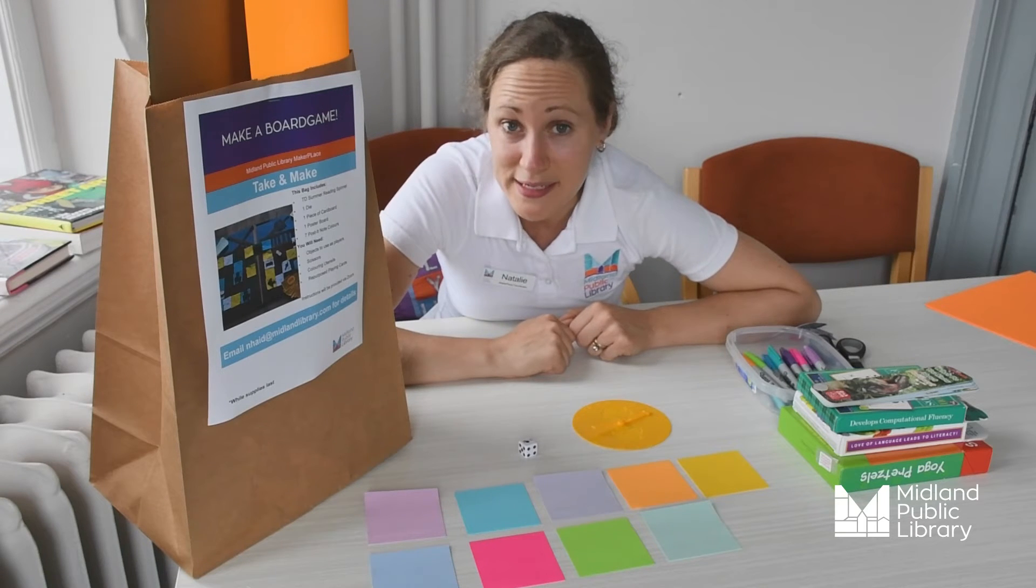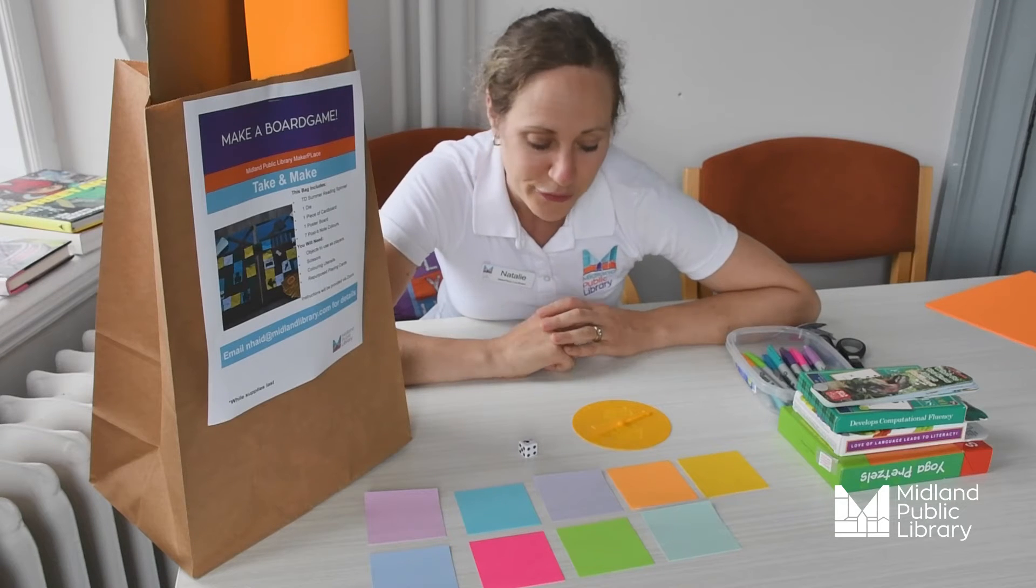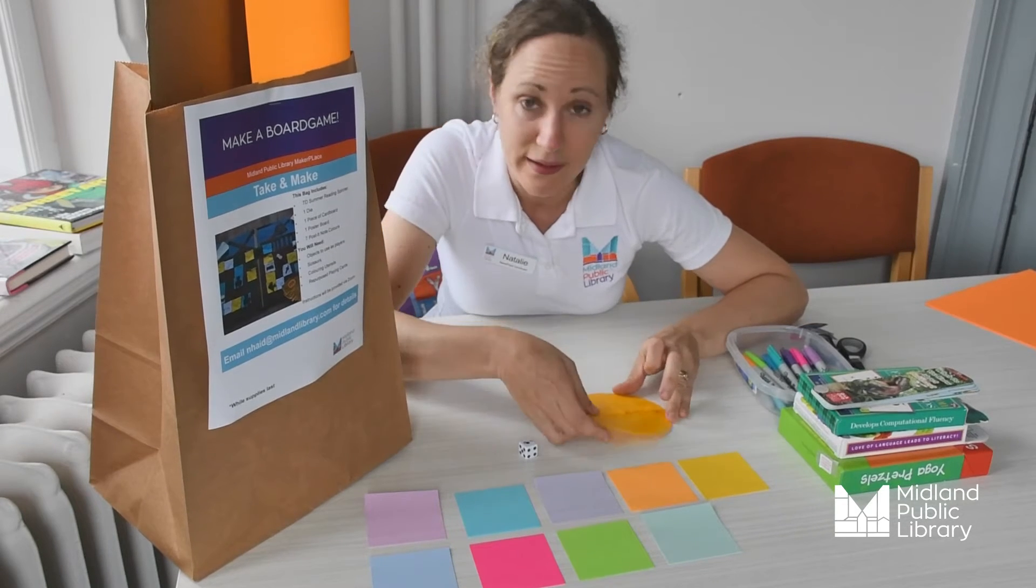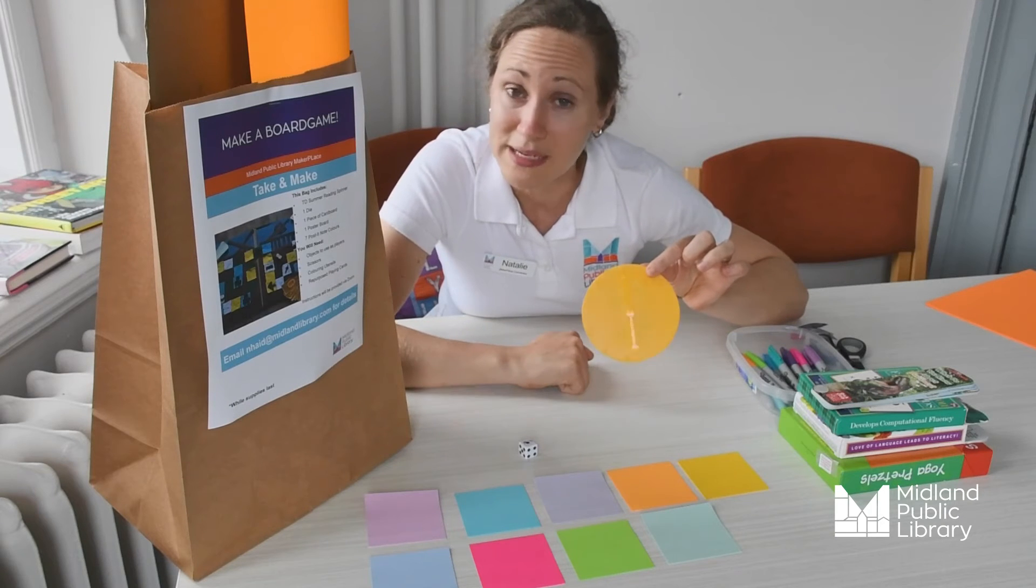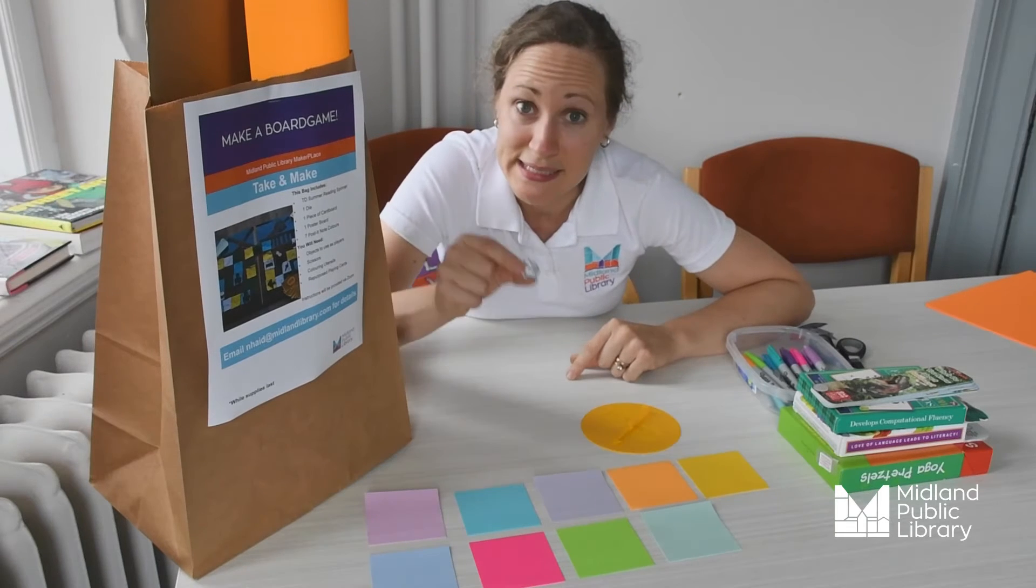Within the Take and Make, you'll find specific items that you'll need in making your board game. The first is a TD Summer Reading Spinner, 3D printed from our 3D printers. You'll also find a die.